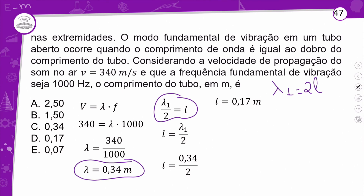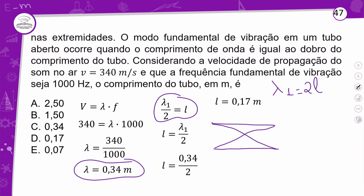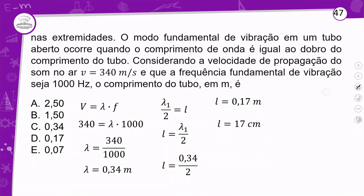Para finalizar, vamos fazer uma relação dos três tubos. A figura representa três tubos acústicos de comprimento D. No tubo 1: λ é metade de D. No tubo 2: λ é um quarto de D. No tubo 3: λ é metade de D. Com relação às frequências dos modos fundamentais de vibração, qual é a relação correta entre F1, F2 e F3?